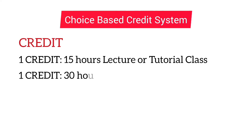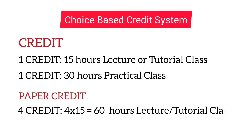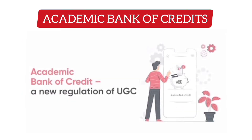One credit is also equivalent to 30 hours of practical class. So in a course or paper of four credits, there will be 4 × 15 = 60 numbers of lectures and tutorials, each class having a duration of one hour. Most reputed universities have already joined and will maintain the integrity of credits earned by the students in the Academic Bank of Credits.